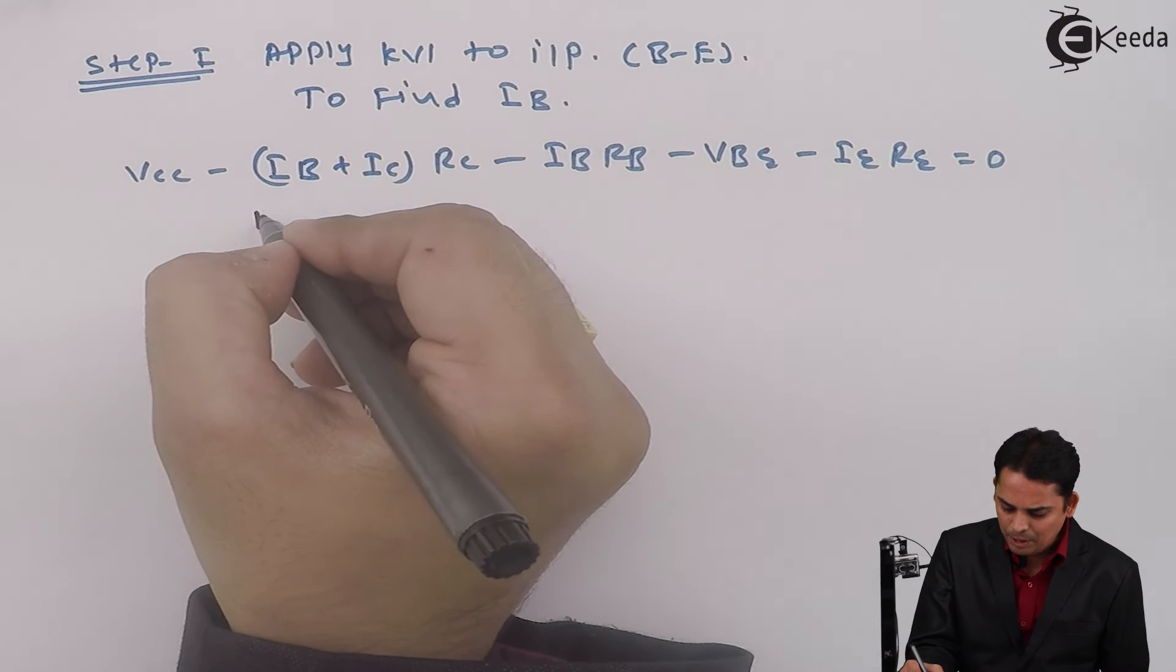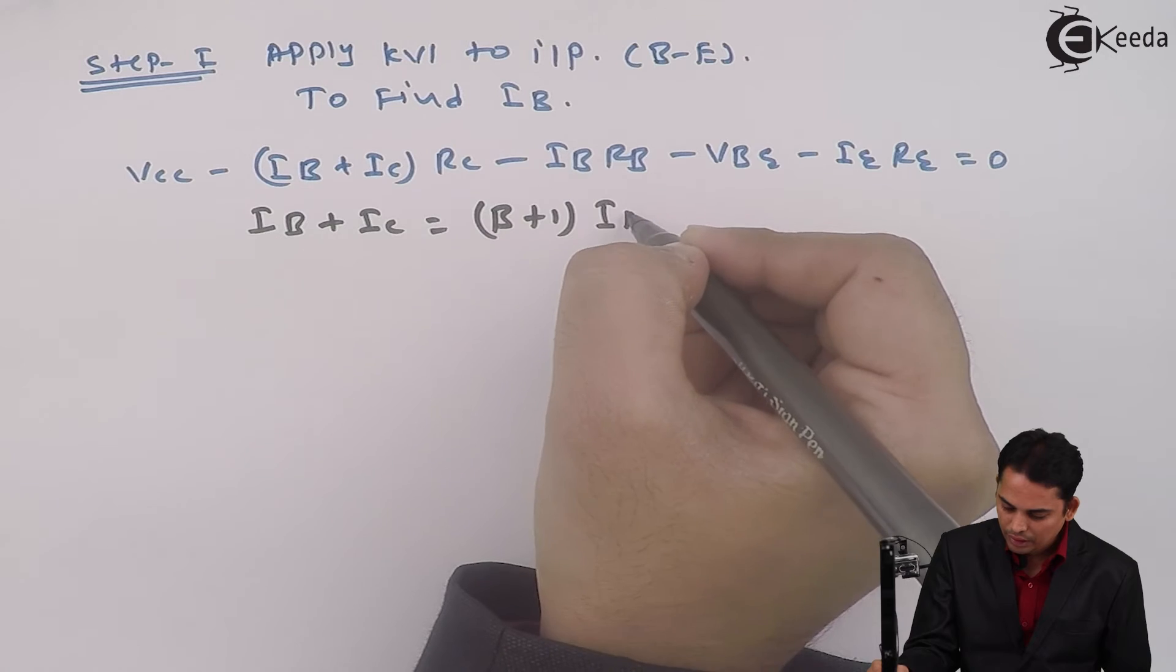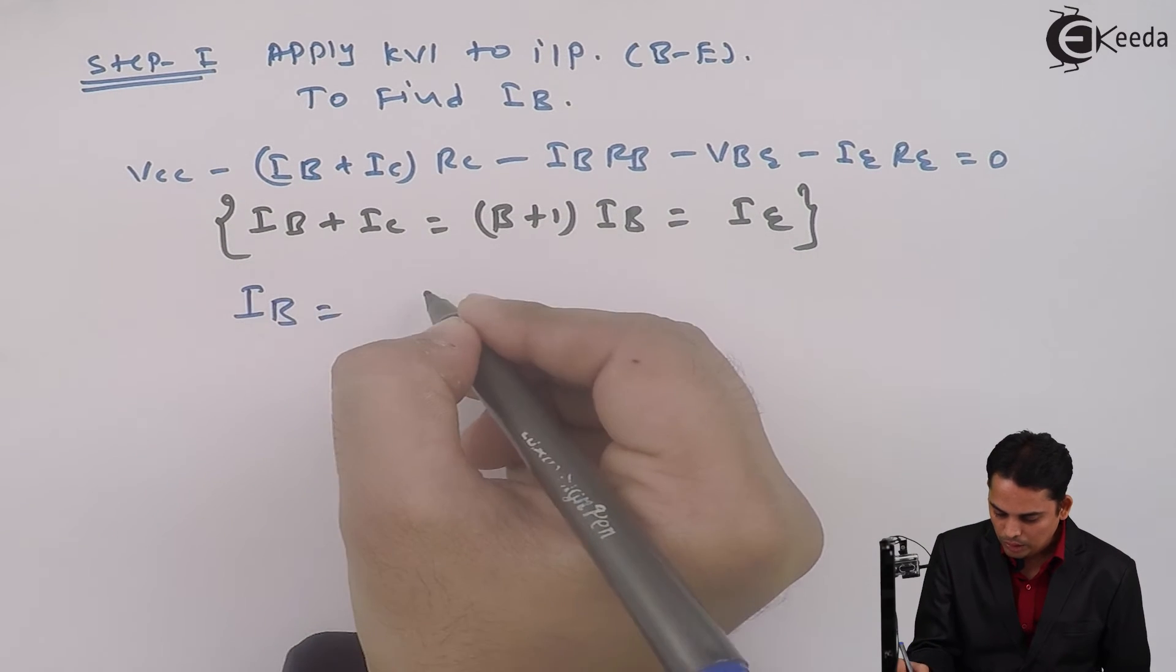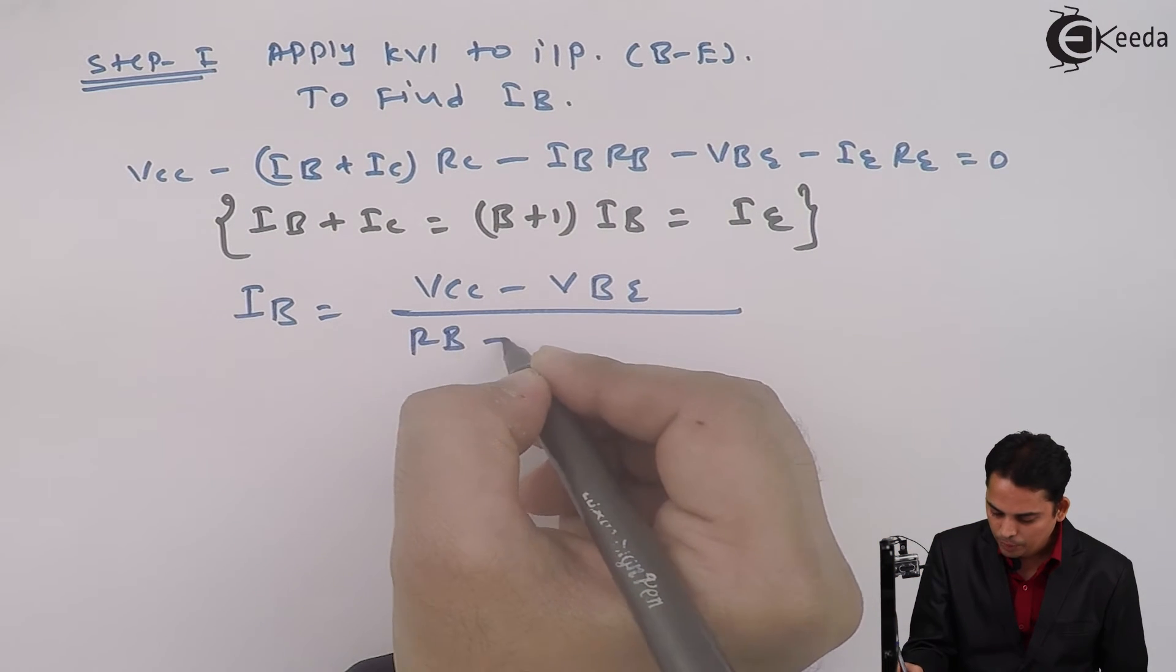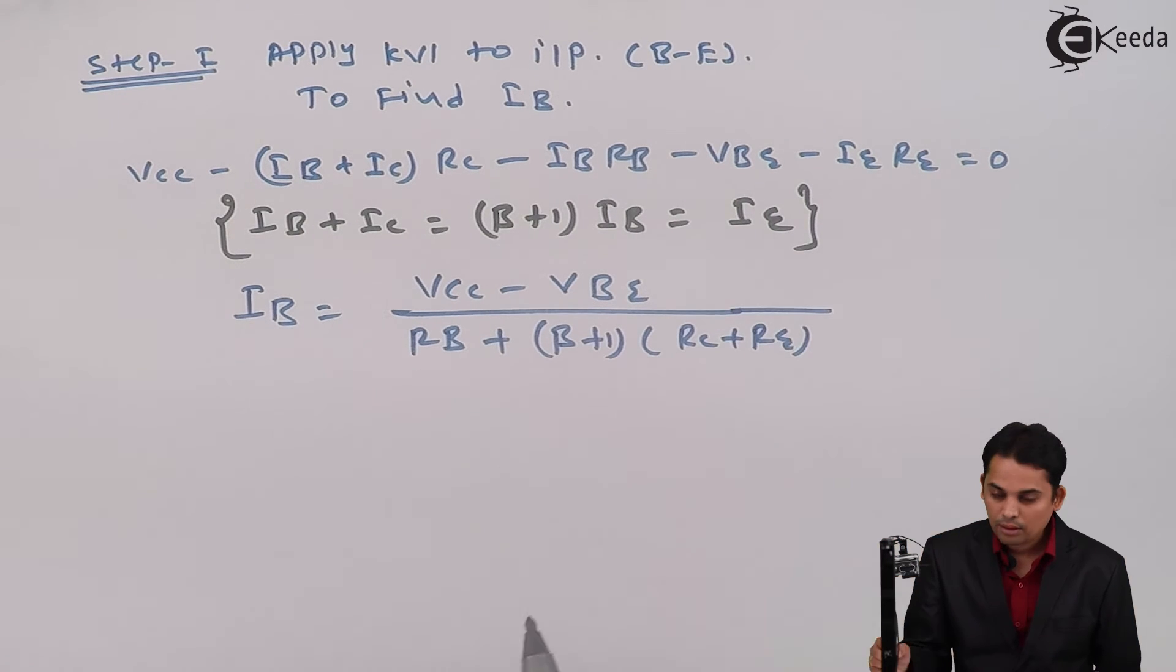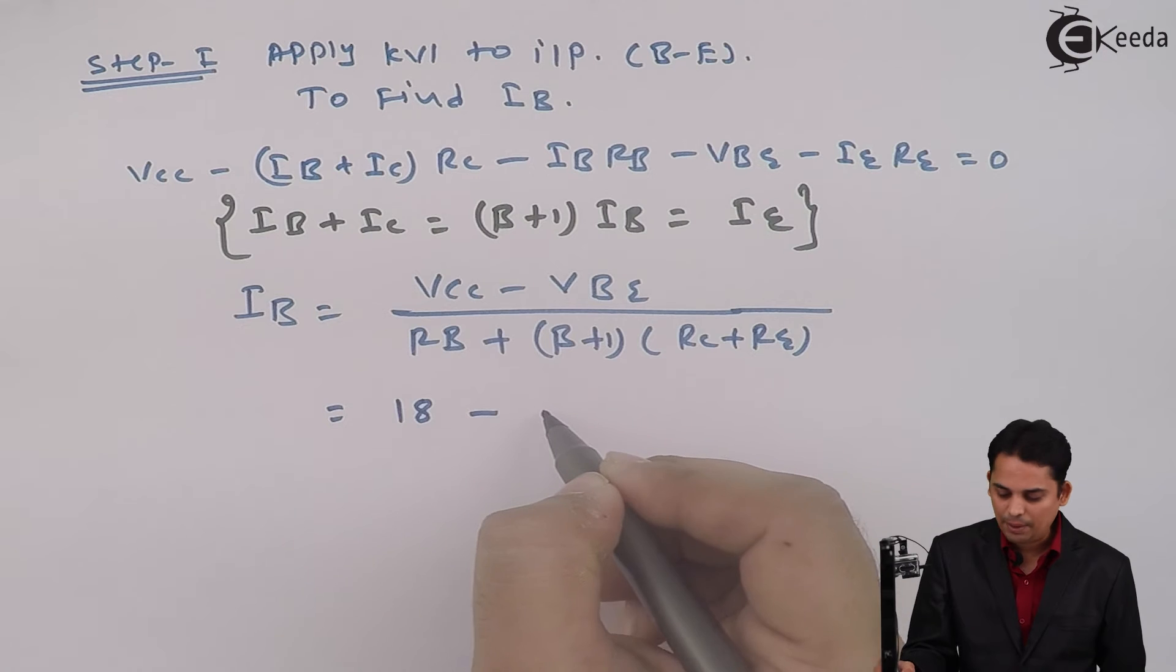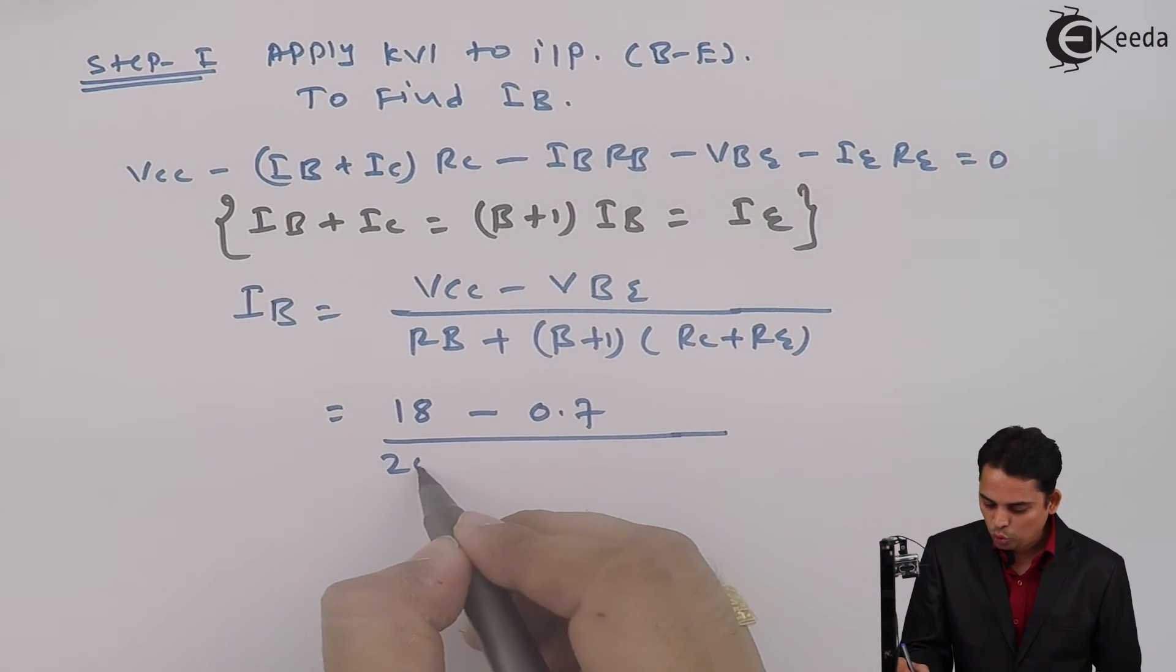Similarly, we can write that IB plus IC is equal to (beta + 1) into IB, which is also equal to IE. And hence, I can write IB is equal to (VCC - VBE) divided by [RB + (beta + 1) times (RC + RE)]. Now we will substitute value of all these parameters. VCC is given as 18 volts. VBE can be taken as 0.7 volts.